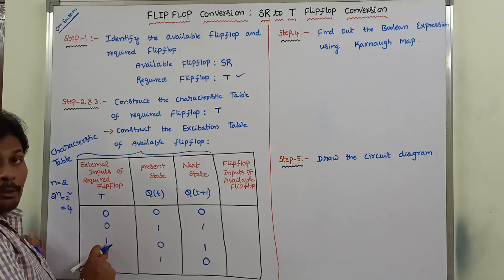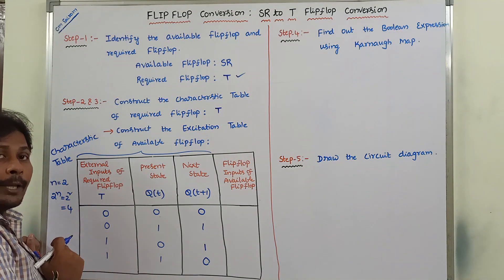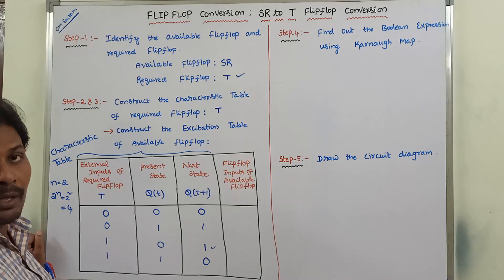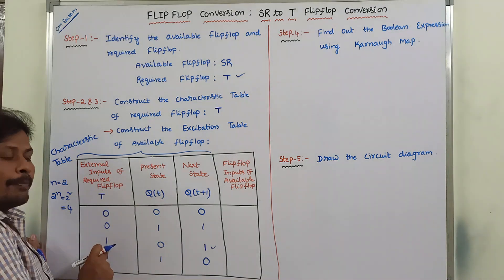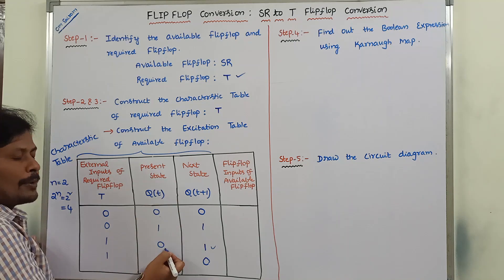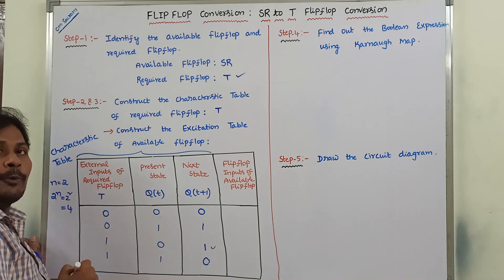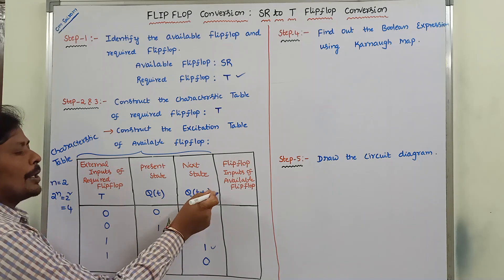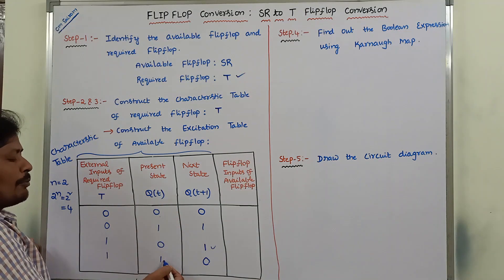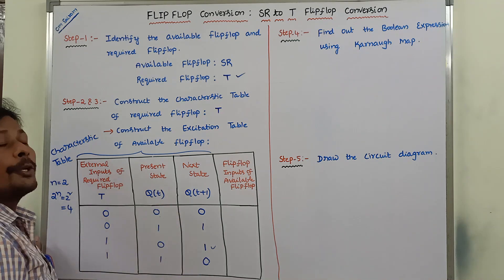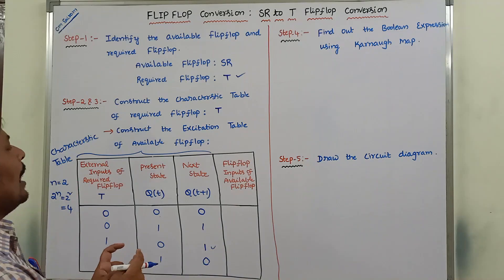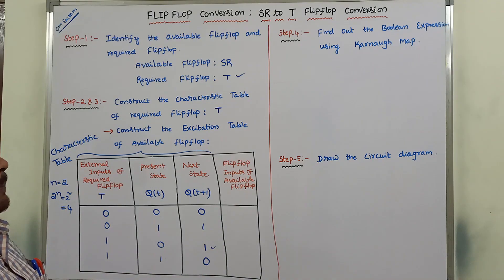Whenever T=1, the complement of Q(t) is obtained as Q(t+1). So when T=1 and Q(t)=0, the complement of 0 is 1, so Q(t+1)=1. When T=1 and Q(t)=1, the complement of 1 is 0, so Q(t+1)=0. This is the characteristic table of the required flip-flop T.